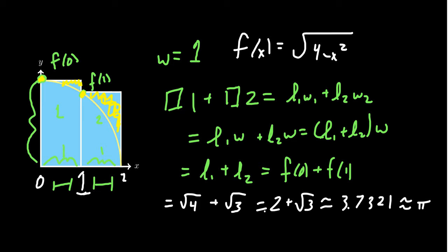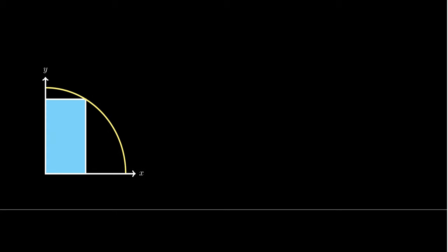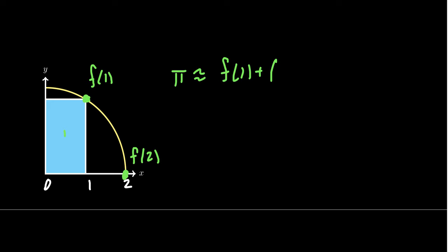Using the same subdivision — 0, 1, 2 — but now the height of the first rectangle is f(1), and the height of the second rectangle is f(2). So π ≈ f(1) + f(2), multiplied by the width of 1.